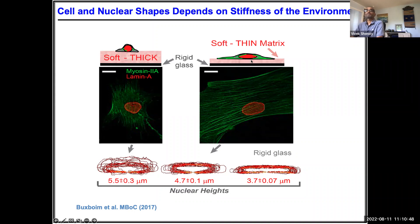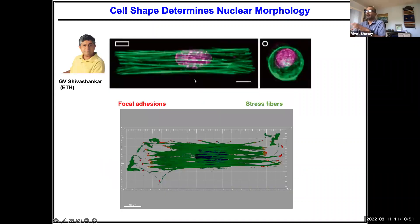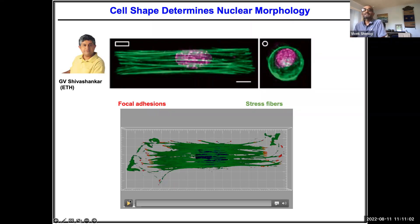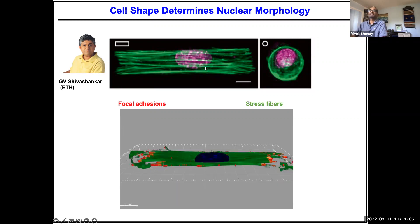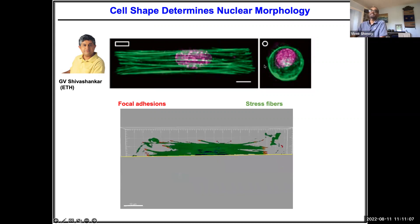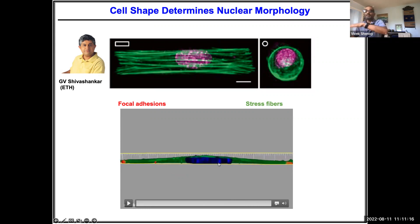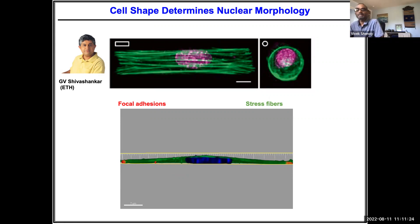One way of recapitulating this stiffness effect is to take a glass substrate and control the cell shape by appropriately designing a fibronectin patch. The stiff and soft phenotypes are recapitulated by changing cell shape: when the cell is elongated, adhesions at the ends generate stress fibers that push the nucleus down, making it more like a pancake. Whereas if it's round, as in the soft case, the nucleus is more round.